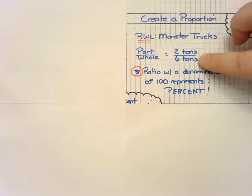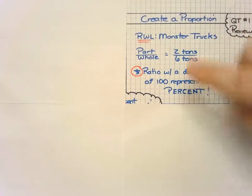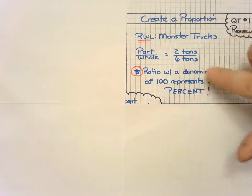We can write that as a ratio, but let's review that a ratio with a denominator of 100 represents a percent.